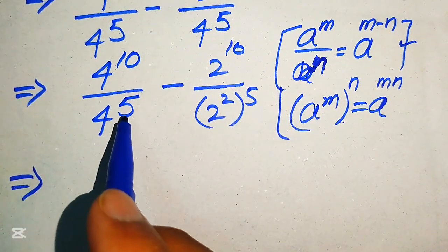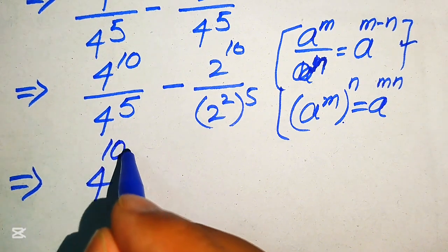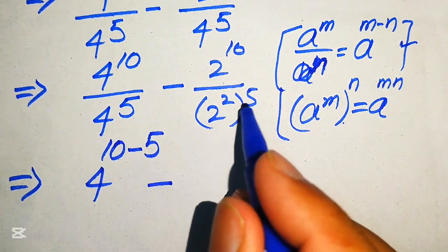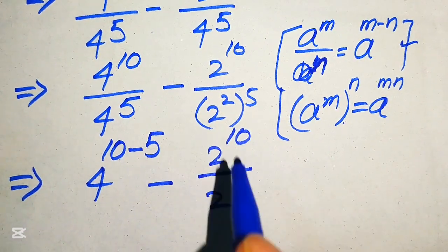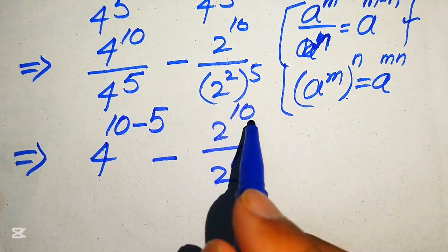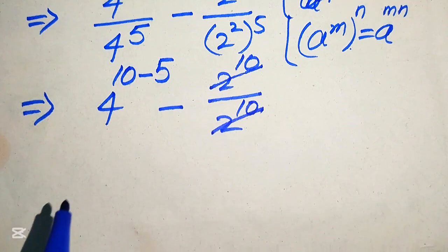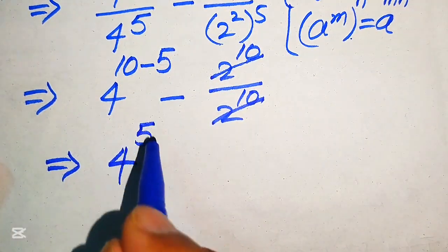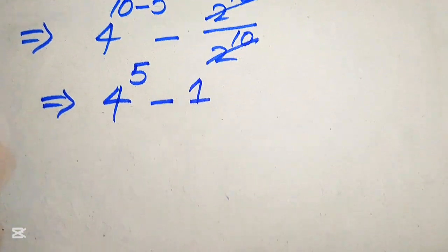Applying the laws: for the first term, 4^10 / 4^5 = 4^(10−5) = 4^5. For the second term, 2^10 / (2^2)^5 = 2^10 / 2^10, which equals 1. So the expression becomes 4^5 − 1.